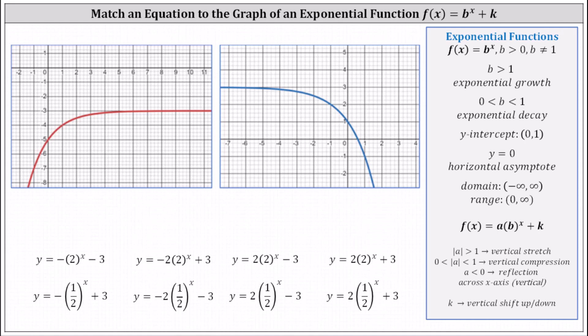We are given two graphs and eight equations, or eight functions. We want to match the correct equation with the correct graph. Notice all of the equations are in the form of f(x), or y equals a times b to the power of x plus k.